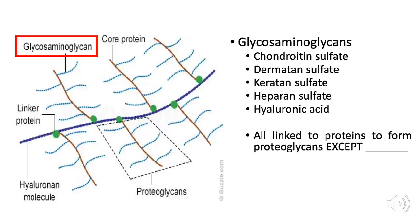It is very important to memorize the different types of glycosaminoglycans: chondroitin sulfate, dermatan sulfate, keratan sulfate, heparan sulfate, and the largest among them, hyaluronic acid. Please take note that all of these glycosaminoglycans are attached to the core protein to form the proteoglycans, except for one — the hyaluronic acid. Hyaluronic acid is the largest among the glycosaminoglycans and is NOT linked to a core protein; instead, it is the central backbone to which proteoglycans are attached via linker proteins.